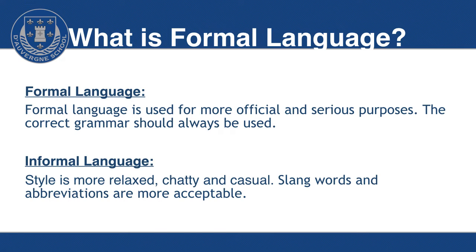Formal language is language that is used for more official and serious purposes. This is where the correct grammar should always be used, so you're not going to be using slang or abbreviations. Whereas in contrast, informal language is where the style is more relaxed, chatty and casual, and you can be using slang words and abbreviations.